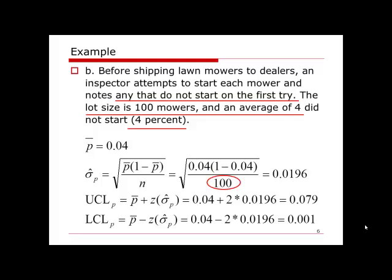One thing I want to point out: it mentioned the lot size is 100 mowers. n, as we talked earlier, is the sample size for each sample—how many samples do we have in each subgroup. It is not the total sample number. For example, if we have three samples and for each sample we have 20 samples, when we do the calculation of the p-chart, n should equal to 20, not 3 times 20, which is 60. This n is the sample size for each lot.